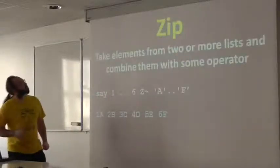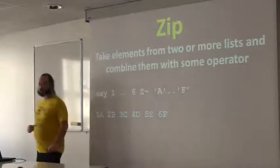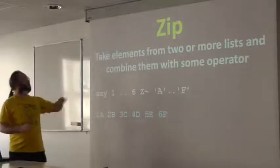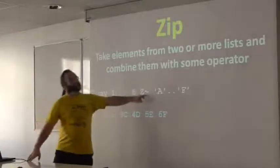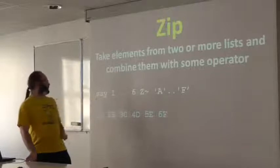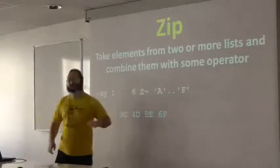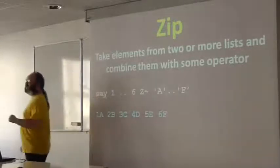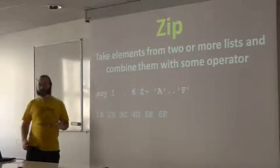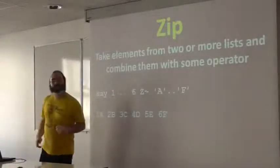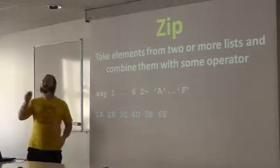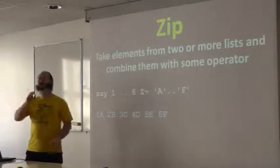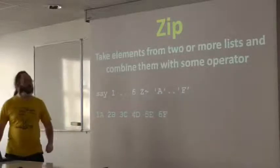Zip. Zip takes elements from two or more lists and just combines them in some way. This is string concatenation. So what I get out is 1a, 2b, 3c, and so forth. By the way, one really useful thing people have done with this is they notice that if you take an array and you want to have it dragging behind one element, when you zip it with itself but offset it by one and you're done.